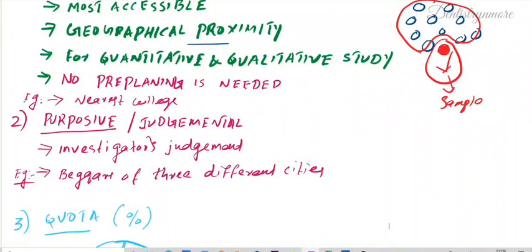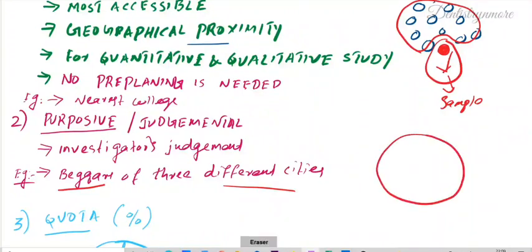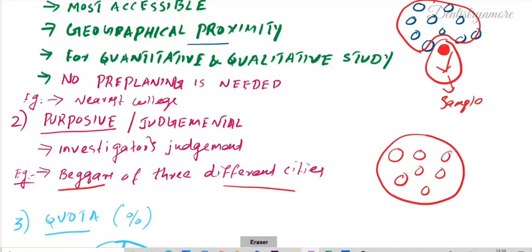For example, if we want to study the quality of life of beggars in a district, we select three different cities. Among the many cities available, we specifically go for beggars from three different cities. We are particularly targeting beggars — not choosing based on accessibility or proximity — because the research is specifically about beggars. This selection is made as per the purpose or judgment of the investigator.